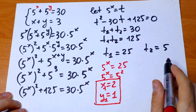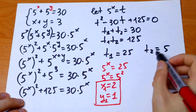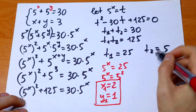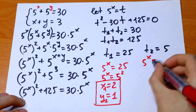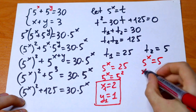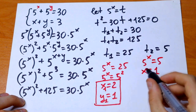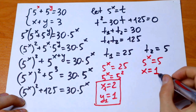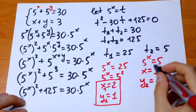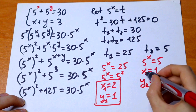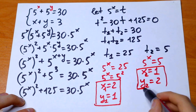From t2 equals 5: we have 5 to the power x equals 5, so x equals 1. Then y equals 2 because x plus y equals 3. This is our second pair of solutions: x equals 1, y equals 2.